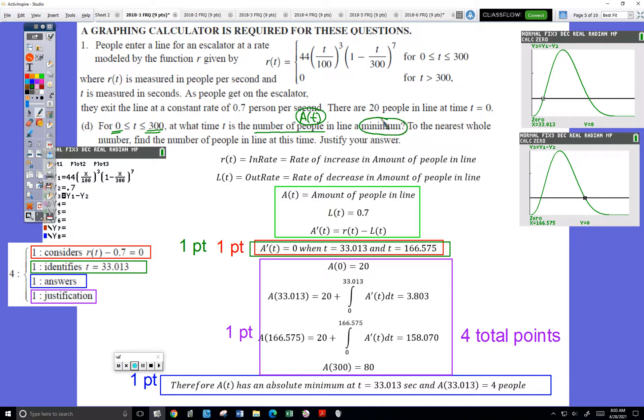As soon as I read that, here's what I know I have to do. A is my amount of people. The min-max theorem says you're going to identify where A is possibly lowest by focusing on the derivative of A. So I've got to focus on A'.